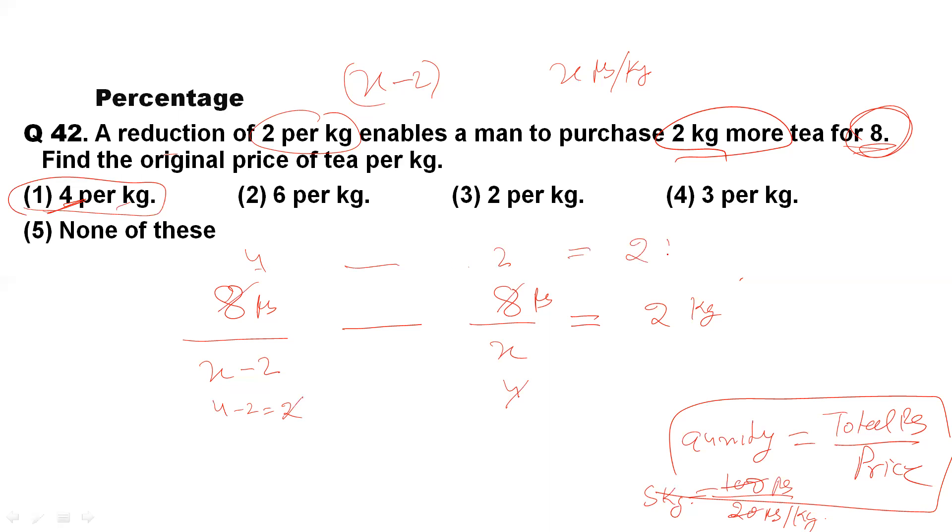Then finally, the answer is option 3, which is 2 rupees per kg. That is the original price.